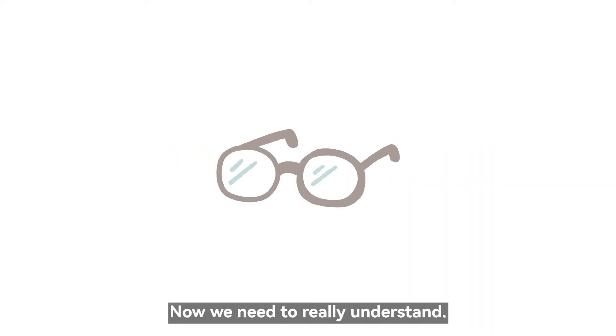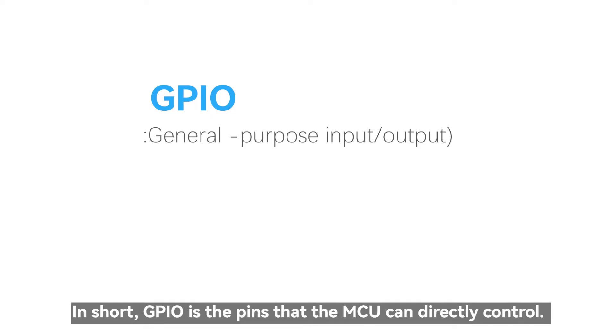Now we need to really understand our first peripheral, GPIO, is general purpose input, output. In short, GPIO is the pins that the MCU can directly control.